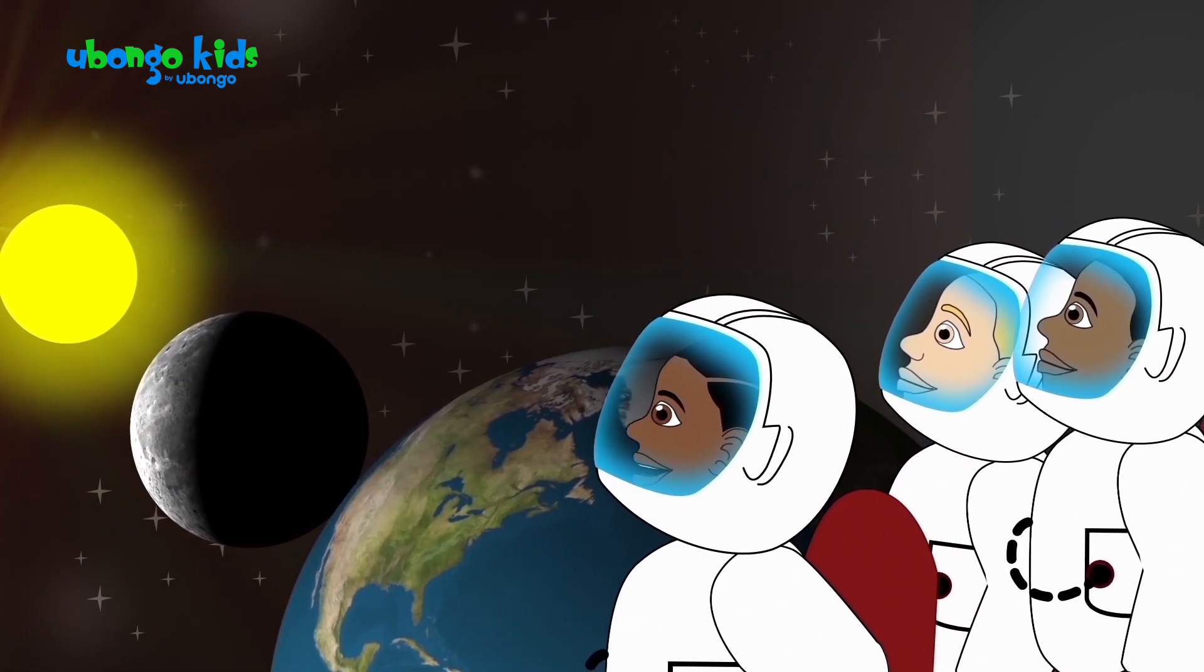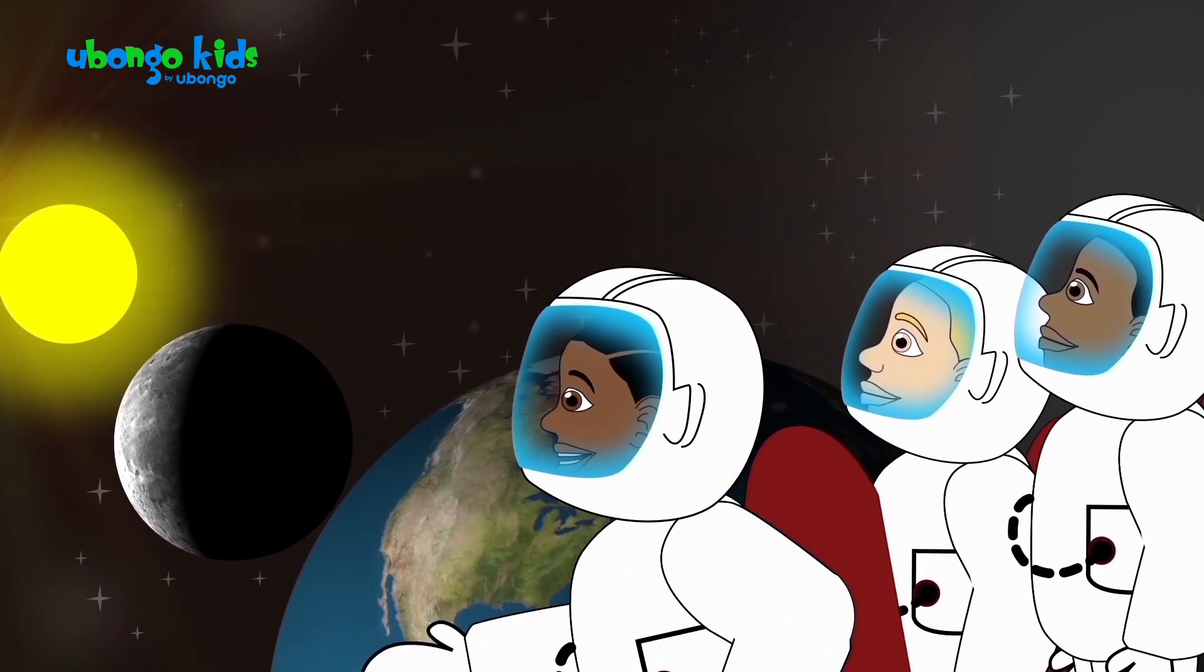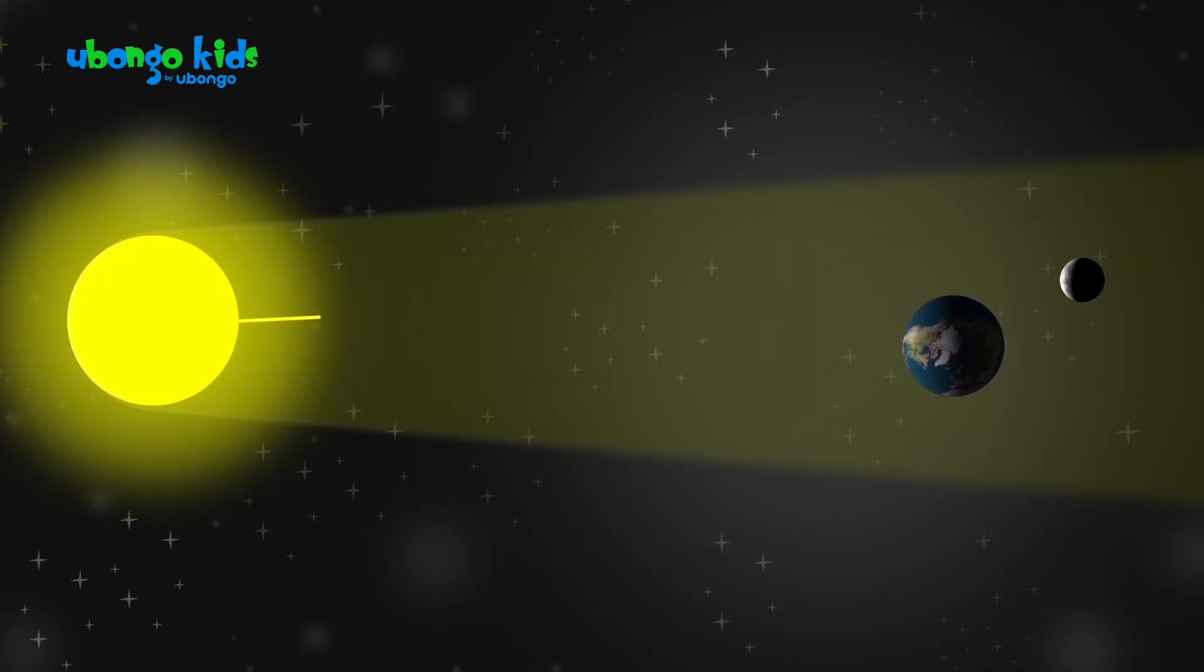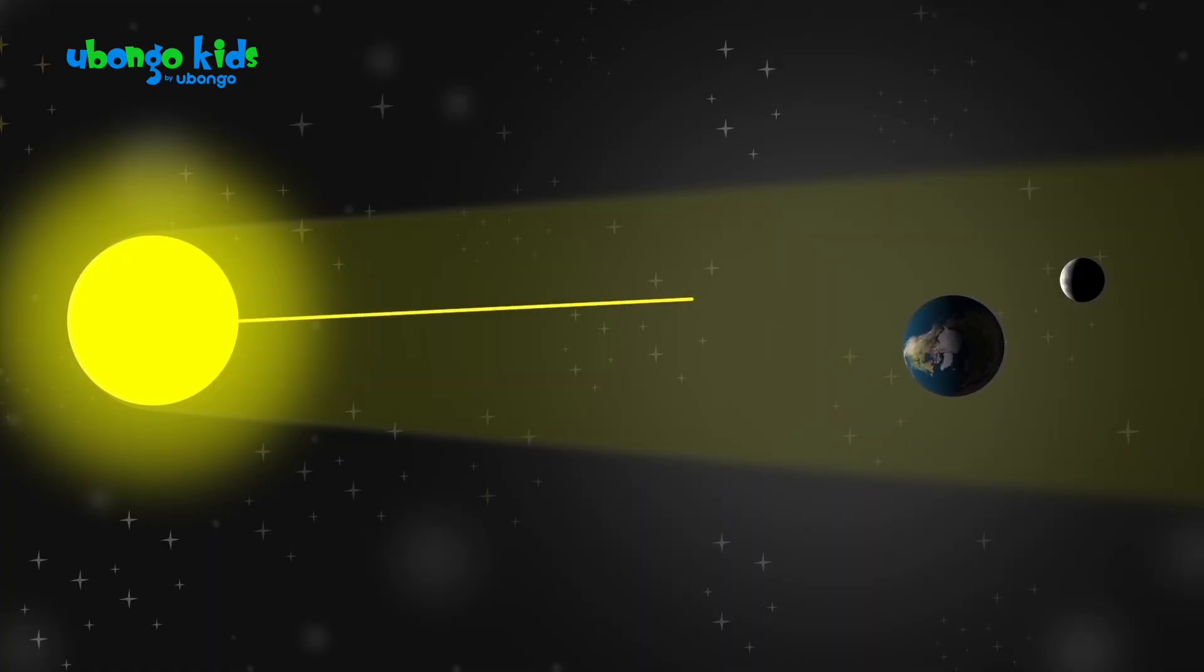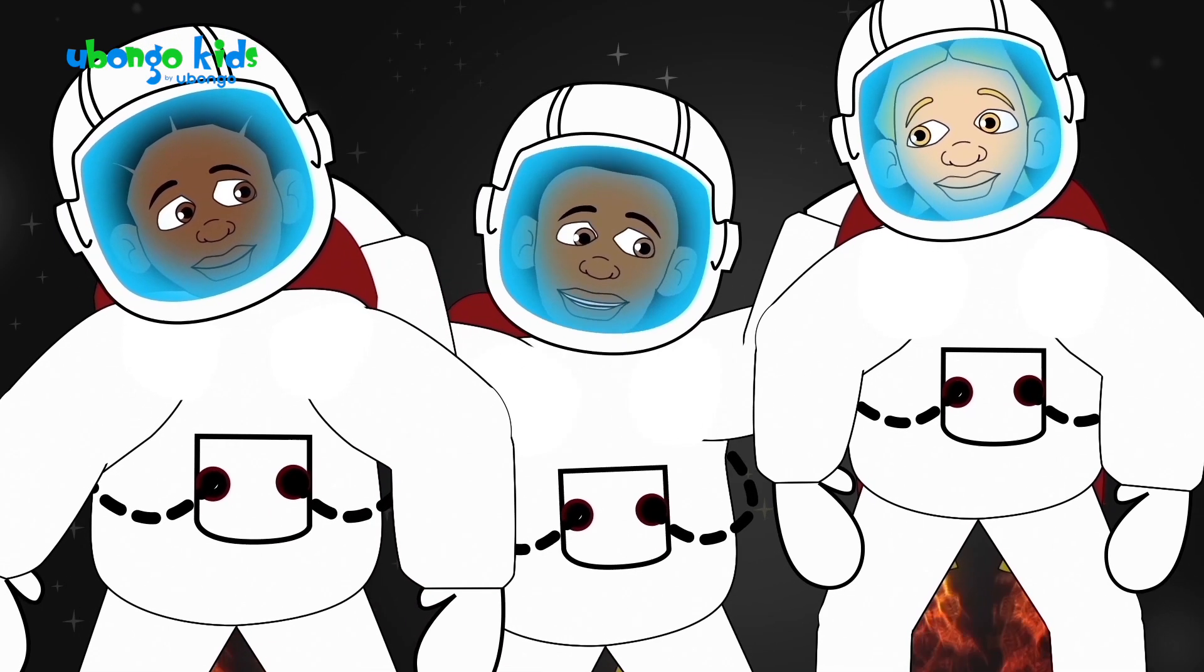You're right, Amani. It looks like the moon only gives light to the sun, not the Earth. The moon doesn't have its own light to give off. It reflects the sunlight like a mirror. I read it in my astronaut book.